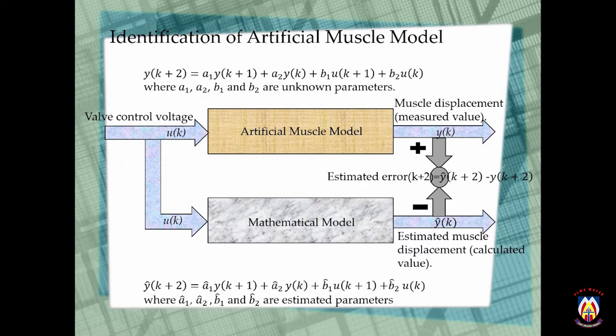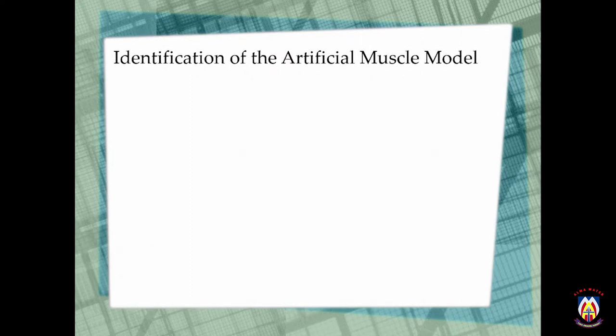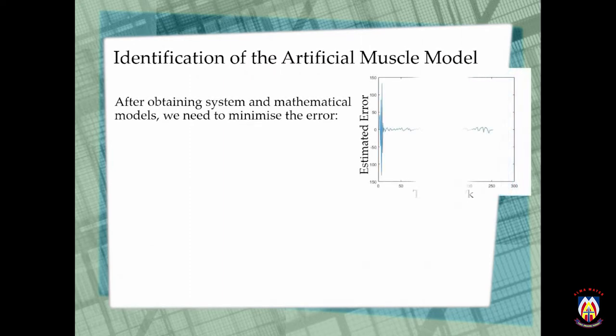So after finding our artificial muscle model equation, we need to minimize our error. We do this by finding the squared of the error, that is basically just to compensate for the positive and negative direction of the error. And then by using a cost function, we can calculate J, which is half of the squared error.